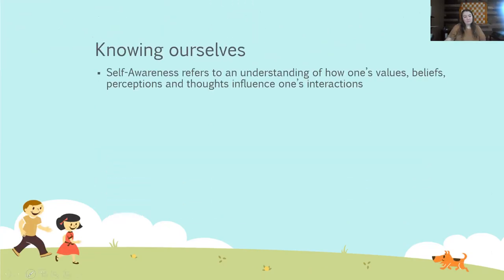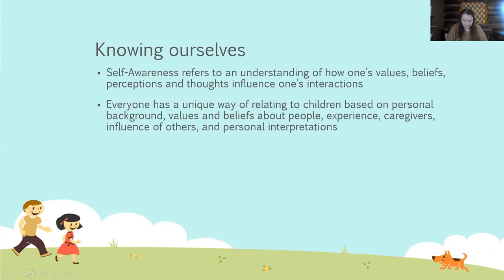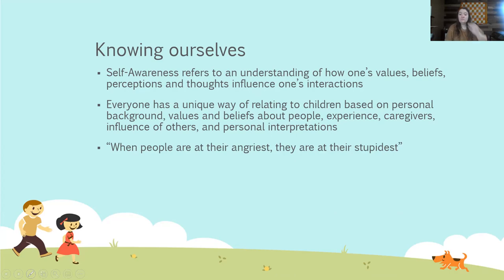Next we're going to talk more about self-awareness. Self-awareness refers to an understanding of how one's values, beliefs, perceptions, and thoughts influence one's interactions. Everyone has a unique way of relating to children based on their personal background, values, and beliefs about people, their experience, caregivers, influence of others, and personal interpretations. As mentioned earlier, it's important to remember that when people are at their angriest, they are at their stupidest. If you take one thing out of this training, we ask that that's what you take. When we are angry, our brains just don't work the same — our neurons do not fire correctly and we are not able to think clearly. So do your best to stay calm.